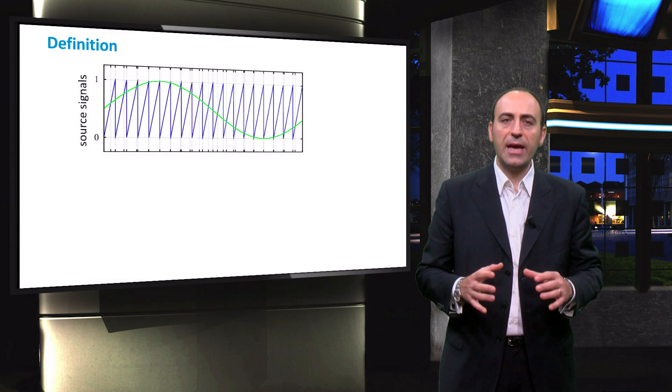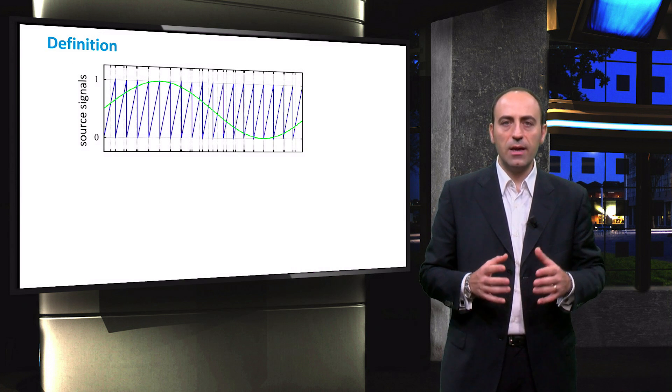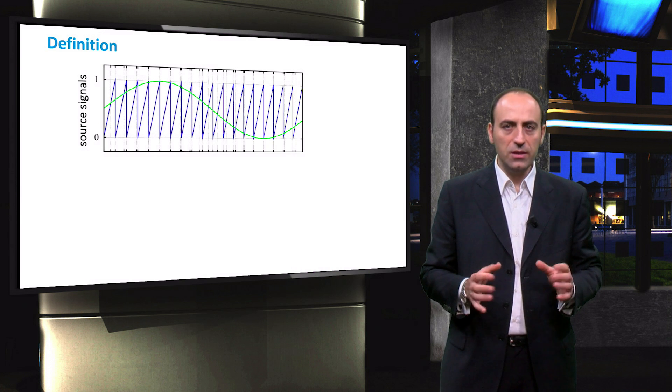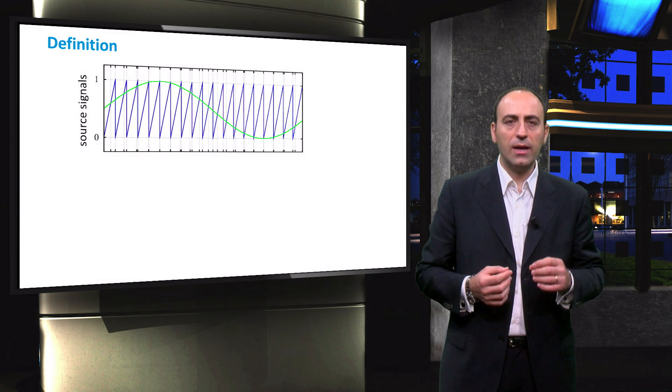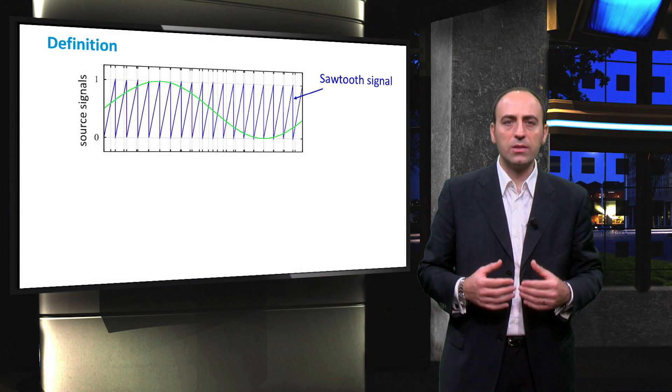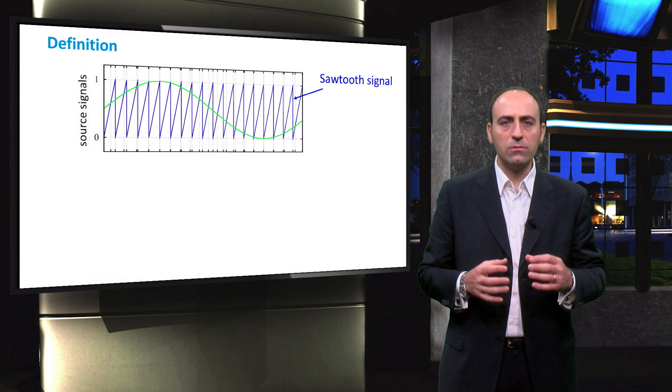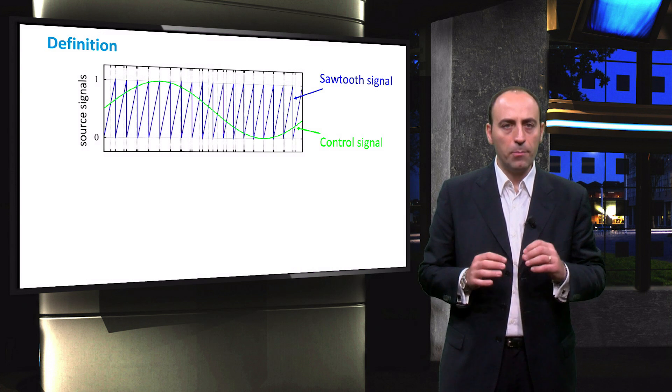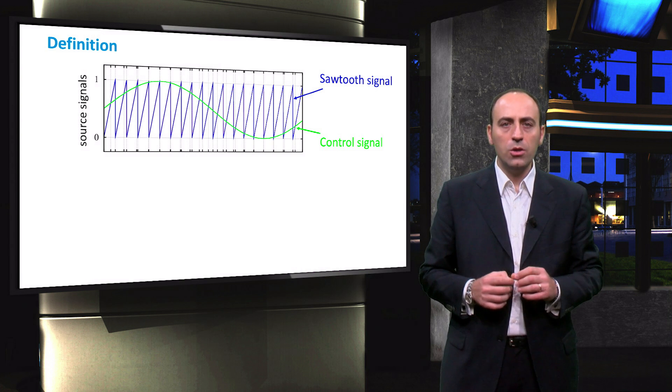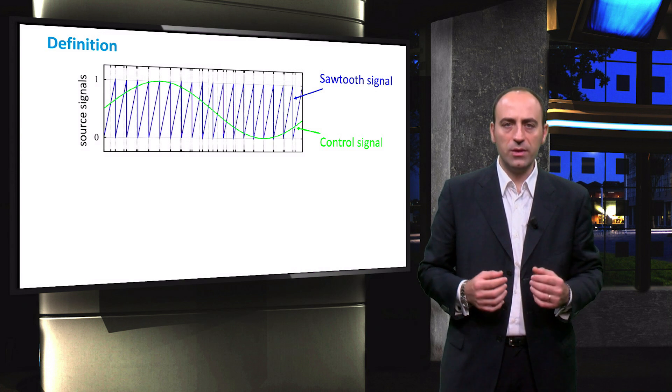PWM method needs a comparison between two signals. The first signal is a periodic signal that is easy to generate, called a reference signal. Often this signal is a triangular or a sawtooth signal. The other signal is a control signal and it is a pure sinusoidal wave.